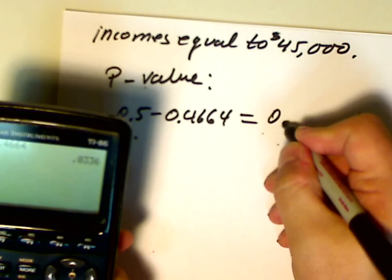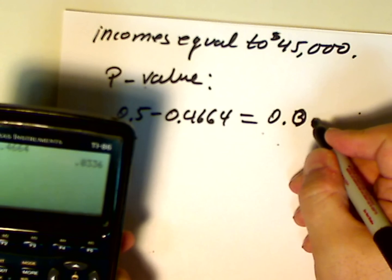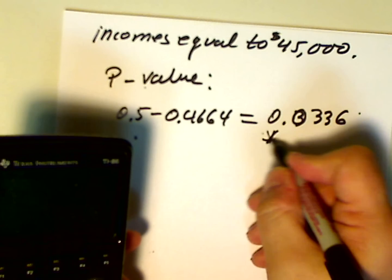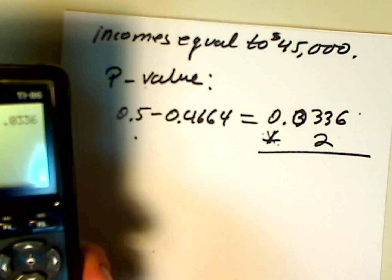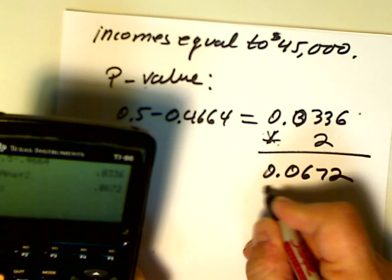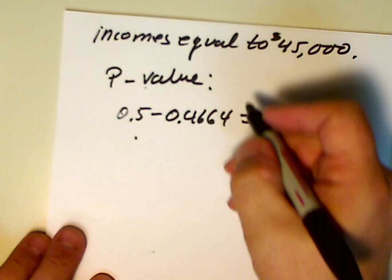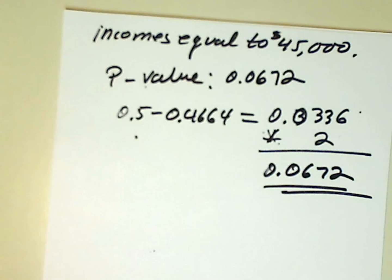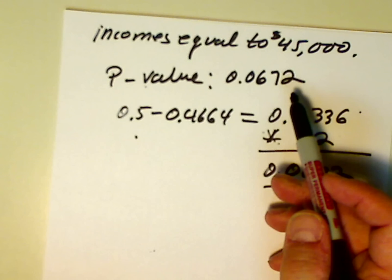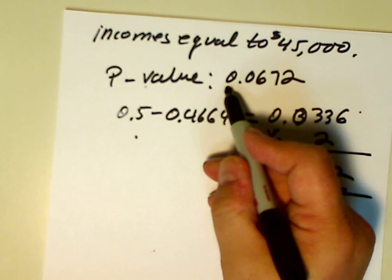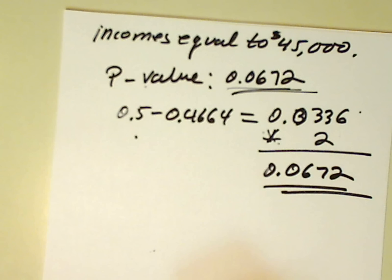0.0336. But we did a two-tailed test, so we need to multiply that by 2. And that gives us 0.0672. So, that's our p-value, 0.0672. And, again, that's less than our α, the level of significance 0.1. And so, again, this confirms we reject the null. We won't get a different outcome from the p-value approach than we do the other approach.